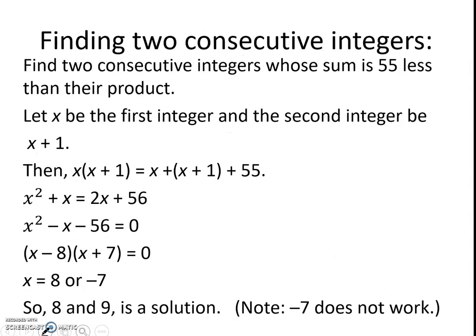Our next example is find two consecutive integers whose sum is 55 less than their product. Let x be the first integer and the second integer be x plus 1. We can let it be x plus 1 because we know consecutive integers is the next integer. So by adding 1, we will get our next integer.